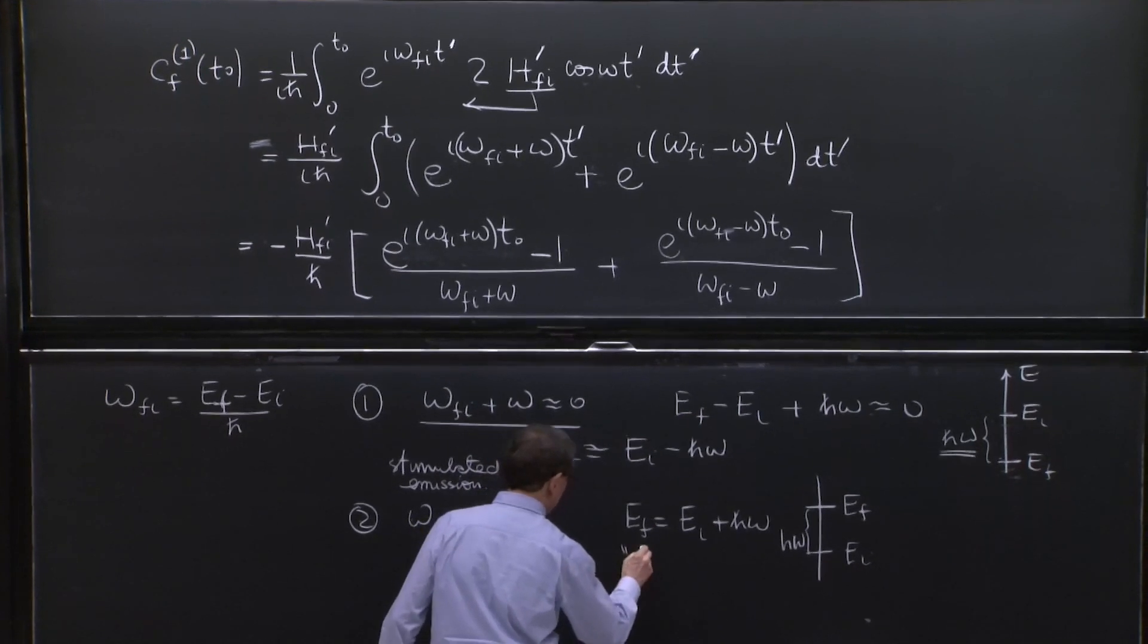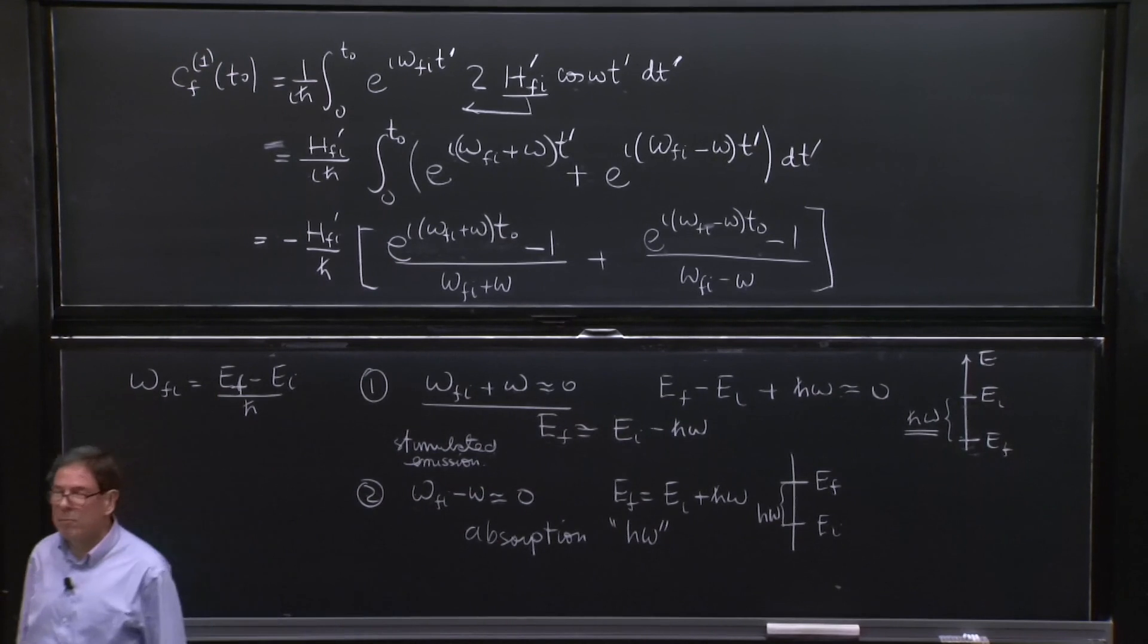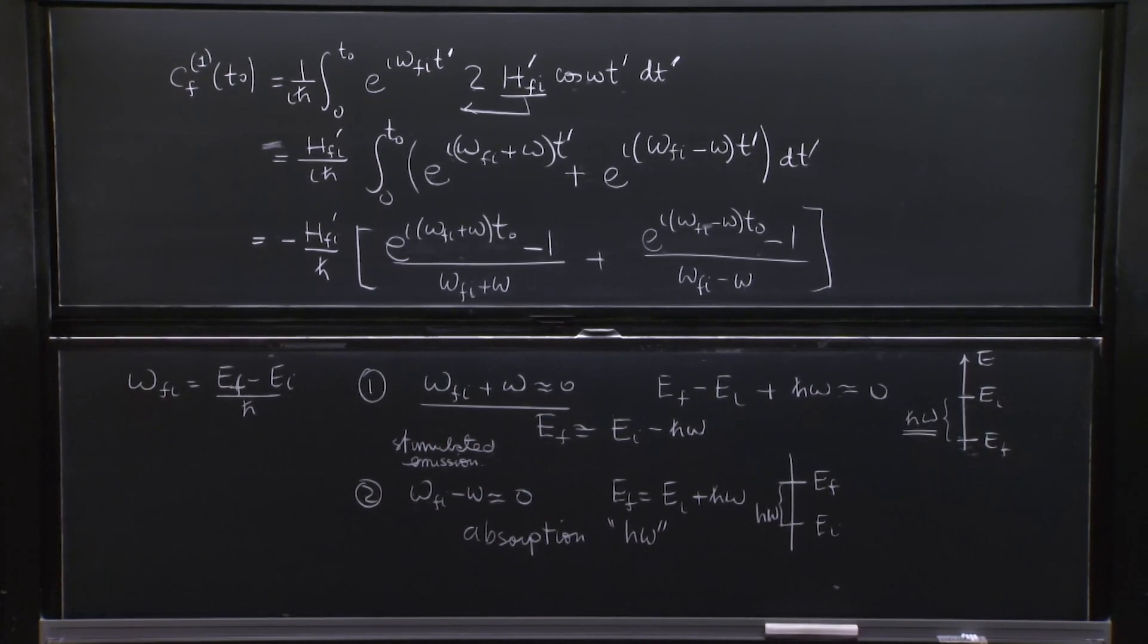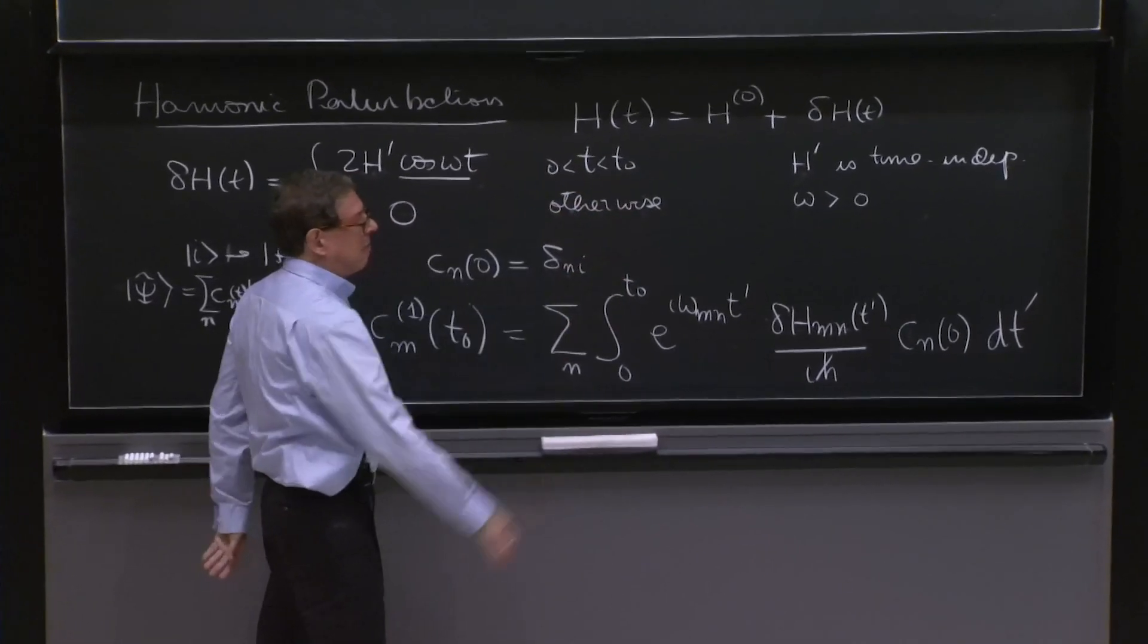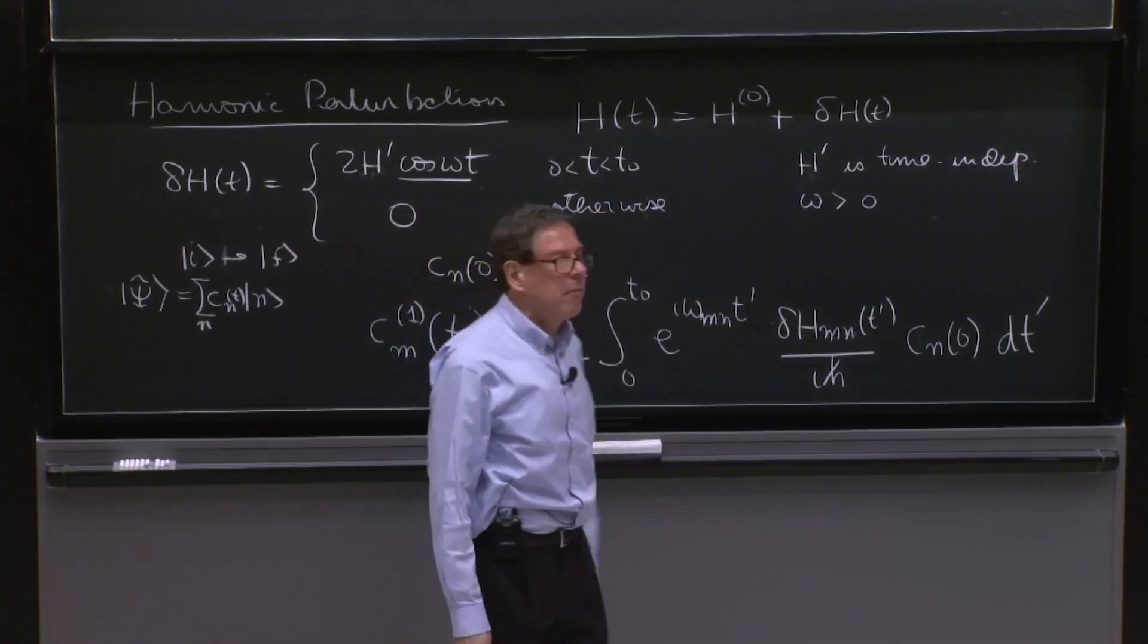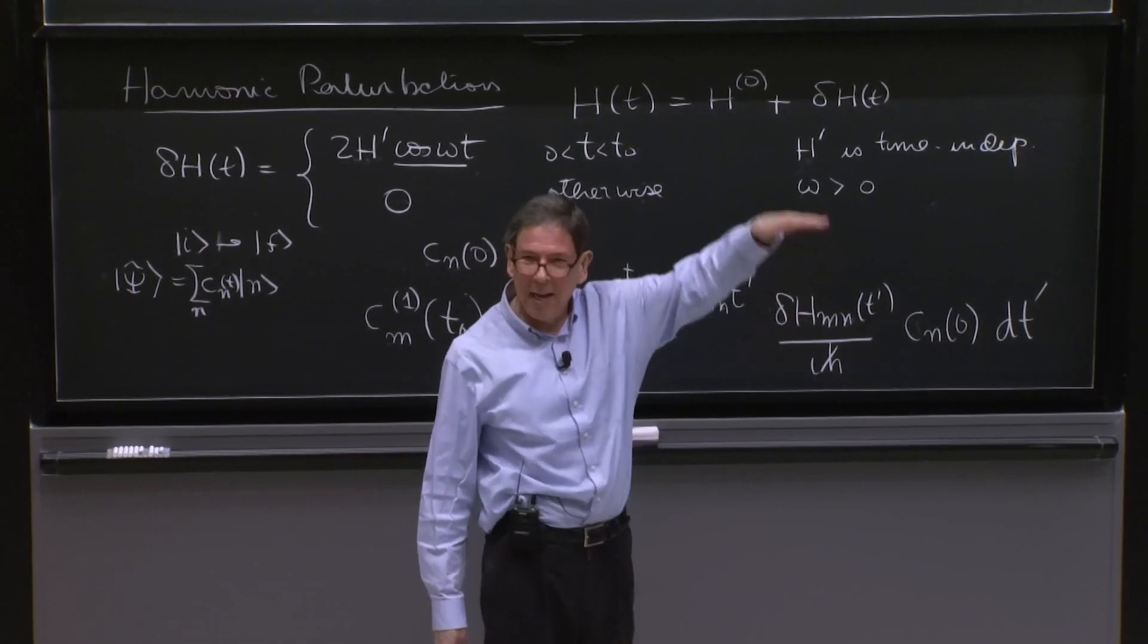You absorb energy h bar omega from the perturbation. The perturbation is capable of giving the system energy h bar omega to enable a transition between EI and EF.